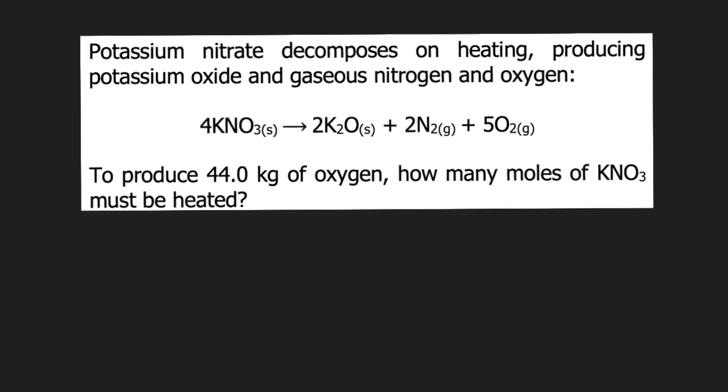In order to solve this problem, we need to do a series of conversions. Starting from 44.0 kilograms of oxygen gas, we need to convert this to grams of oxygen gas, then from grams of oxygen gas to moles of oxygen gas, and from moles of oxygen gas to moles of potassium nitrate.